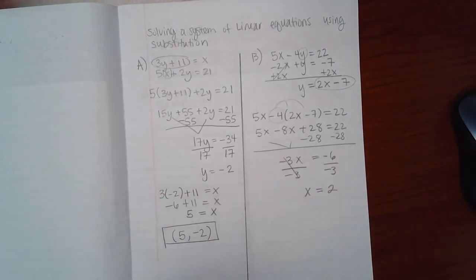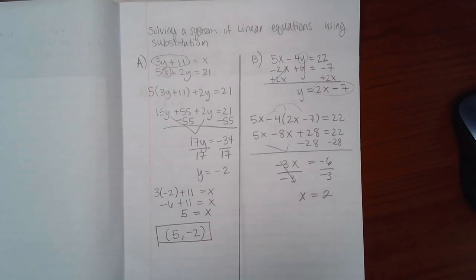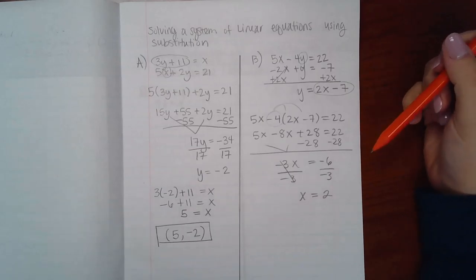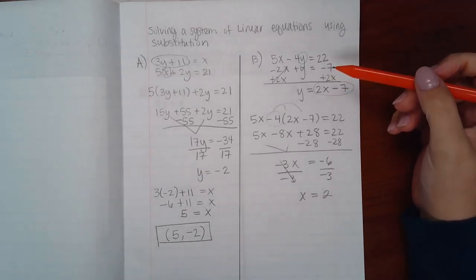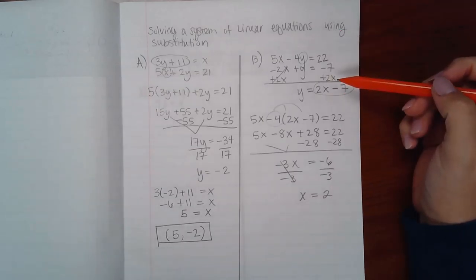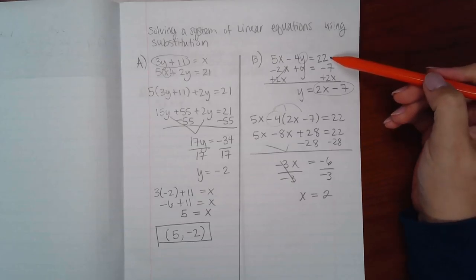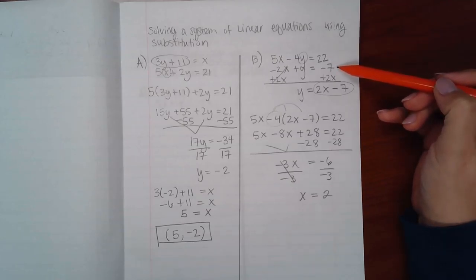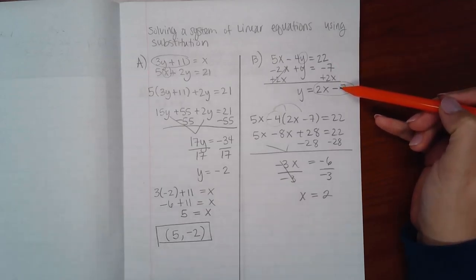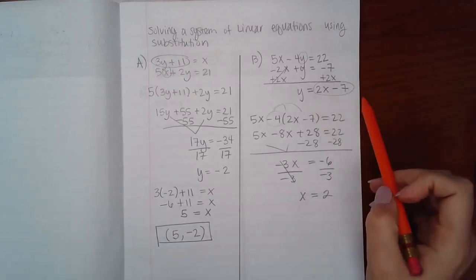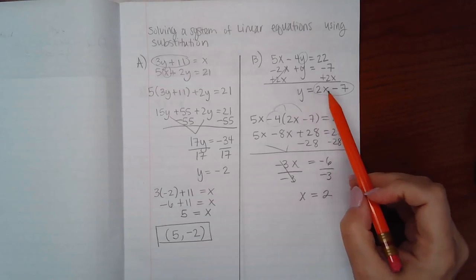Again, this is a system of linear equations. Which means my solution should be a point. I have the x coordinate of that point. What I'm missing is the y coordinate of that point. However, I can use any equation that I have from the beginning. I can use the original top equation, the original bottom equation, or I could even use the manipulated bottom equation.